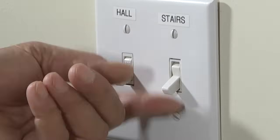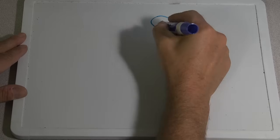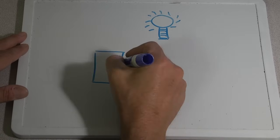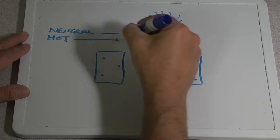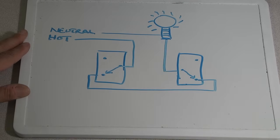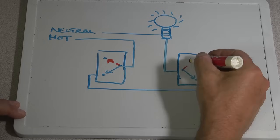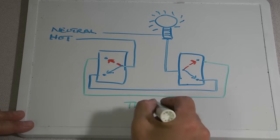When you have lights that are switched on and off at two different locations, this is called a three-way switch. At one switch there's a hot wire and two traveler wires. At the other switch there's a load wire and the other end of the same two travelers. A three-way switch has a common screw and two other screws that output electricity to one of the other screws one at a time.